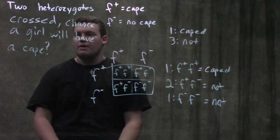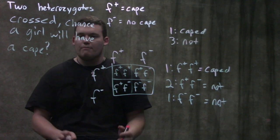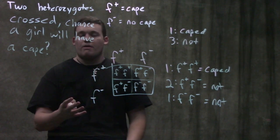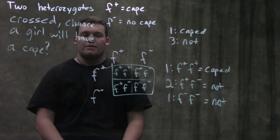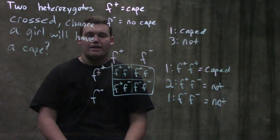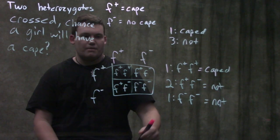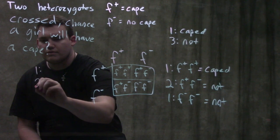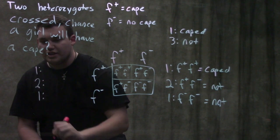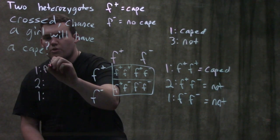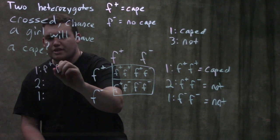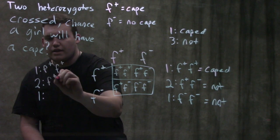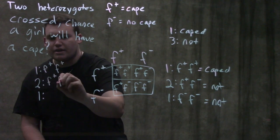For males, you can pause the video and try it yourself before I work it out. We're going to have the exact same 1:2:1 genotype ratio here. Always, always write out your genotypes before you try to work out phenotypes. So we've got our two heterozygotes giving us the same one f-plus f-plus, two f-plus f-minus, and one f-minus f-minus.